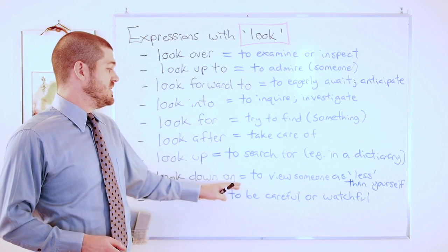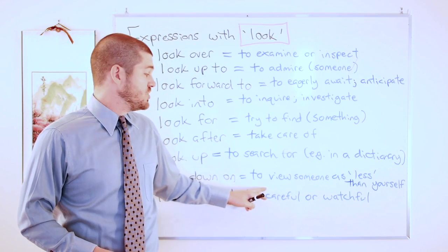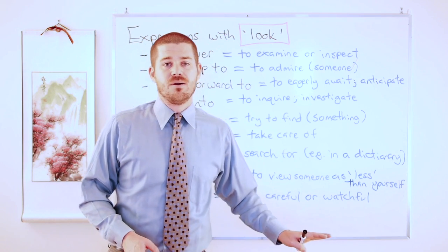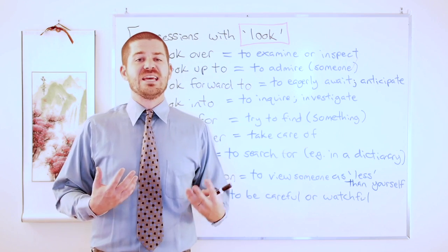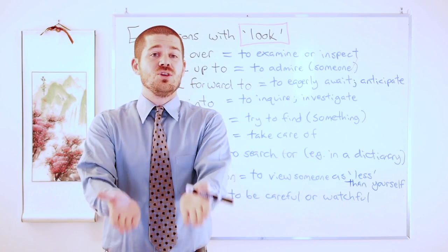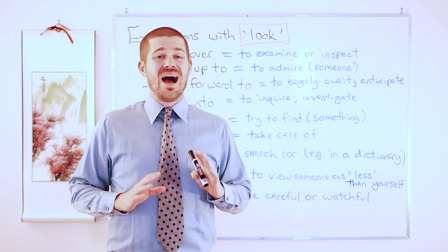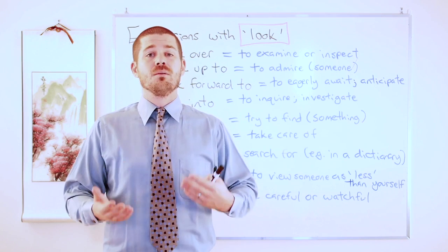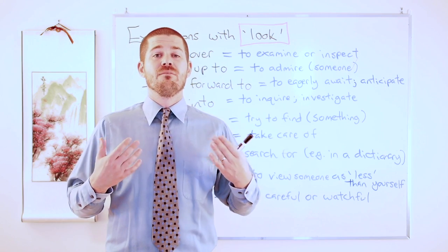Two more to go. Next one, look down on. It says in our definition to view someone as less than yourself. This is a negative expression. If I look down on you, it means I have a negative view of you. Maybe I think you are not important. I think you are not very smart.